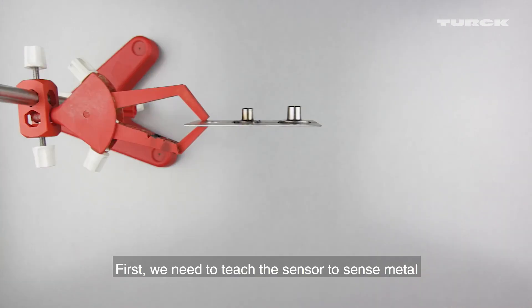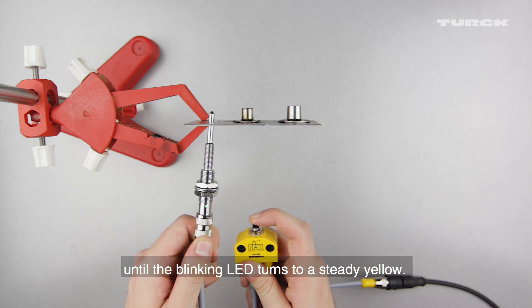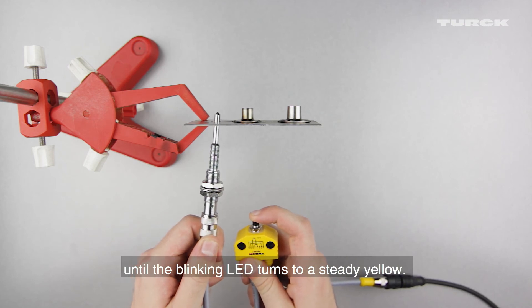First, we need to teach the sensor to sense metal without the nut in place. To do this, insert the sensor through the mounting hole. Press the button of the teach adapter until the blinking LED turns to a steady yellow.